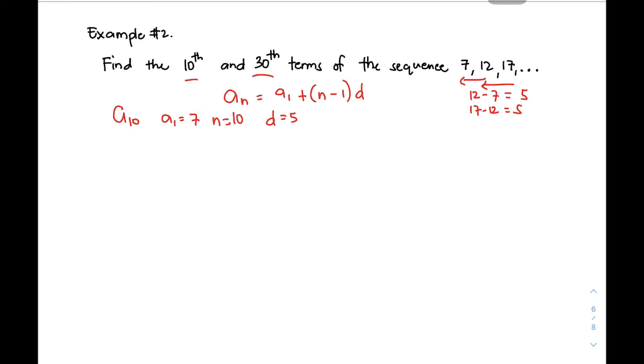To find the 10th term, substitute natin yung formula natin. We have a₁₀ = 7 + (10-1)(5). Then, you will be having a₁₀ = 7 + (9)(5). This is 7 + 45. So, your 10th term for the given sequence is 52.